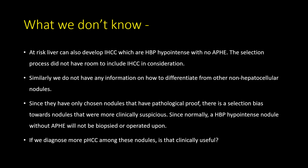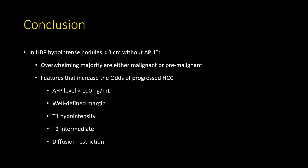An additional question remains: if we diagnose more progressed HCC among these nodules, is that clinically useful? To conclude, in hepatobiliary phase hypointense nodules less than 3 cm without arterial phase hyperenhancement, the overwhelming majority are either malignant or pre-malignant. Five features increase the odds of diagnosing progressed HCC: AFP greater than 100, well-defined margin, T1 hypointensity, T2 intermediate signal, and diffusion restriction. That is all for today's journal watch. Thank you, and we'll meet again.